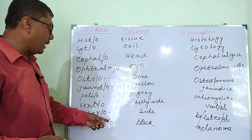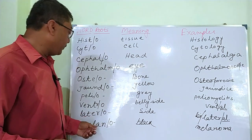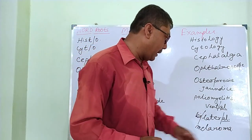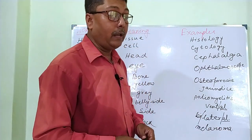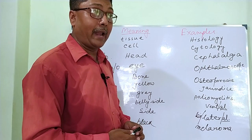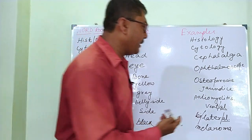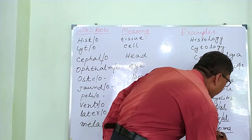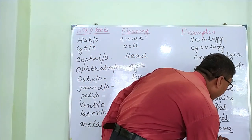'Melano' means black — example: melanoma, where '-oma' means tumor. So melanoma is a black tumor.